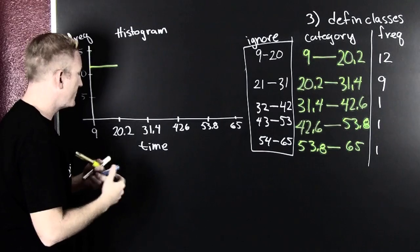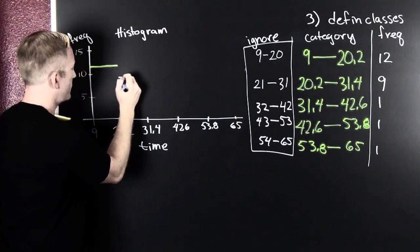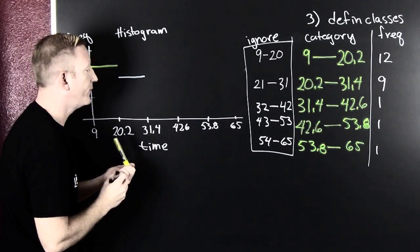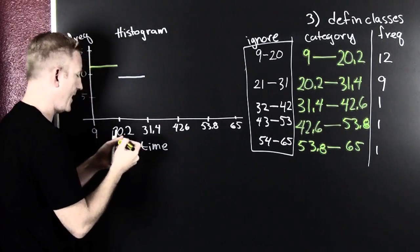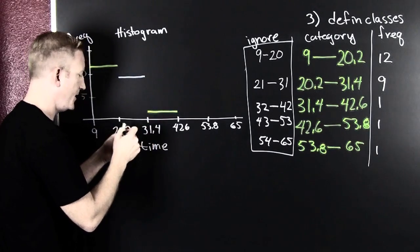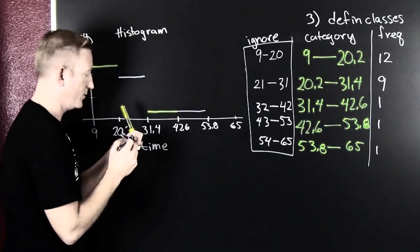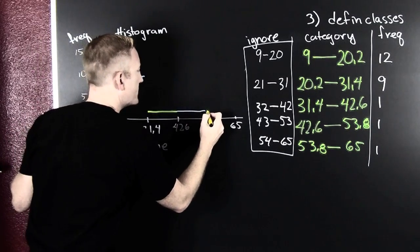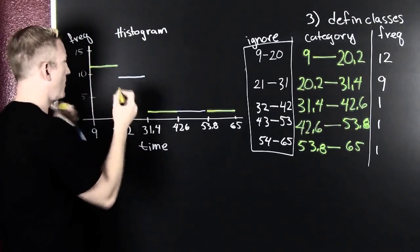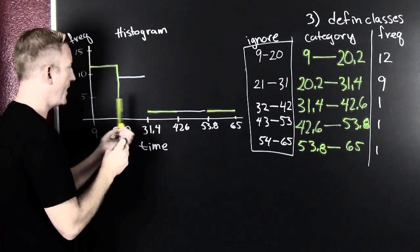And then, from 20.2 to 31.4, I had 9. Fine. So, that's right here. And then, from 31.4 to 42 and all the way on out, I had 1 person who commuted in those intervals. So, we can draw those graphs like that. And let's just connect these lines so they're all pretty. Boom. And I've just created my histogram.